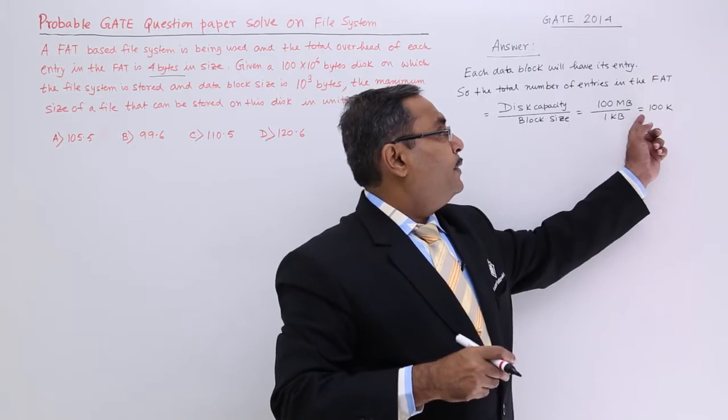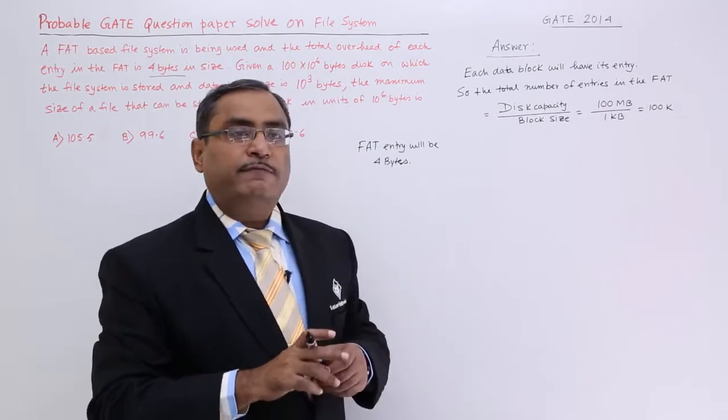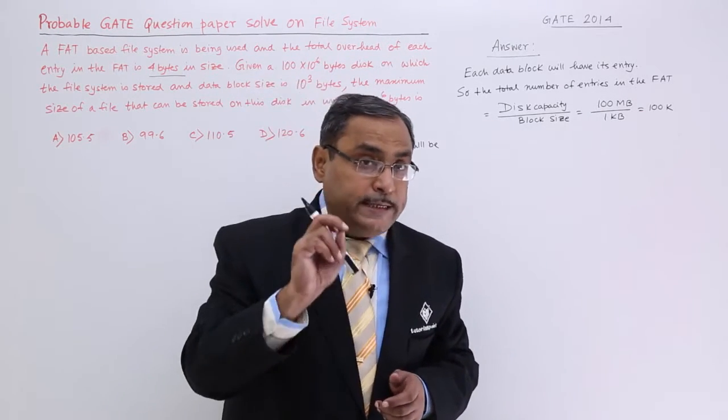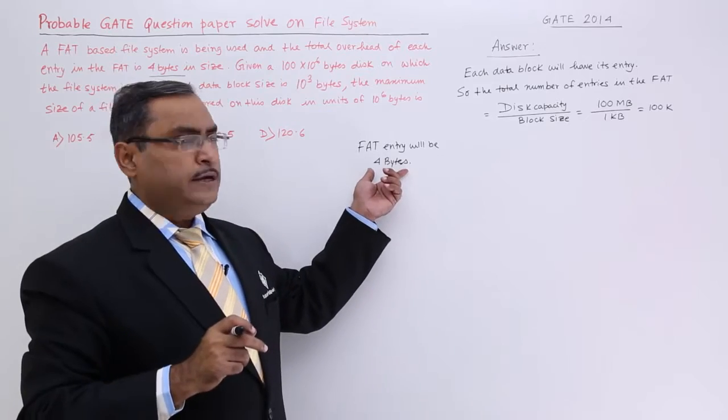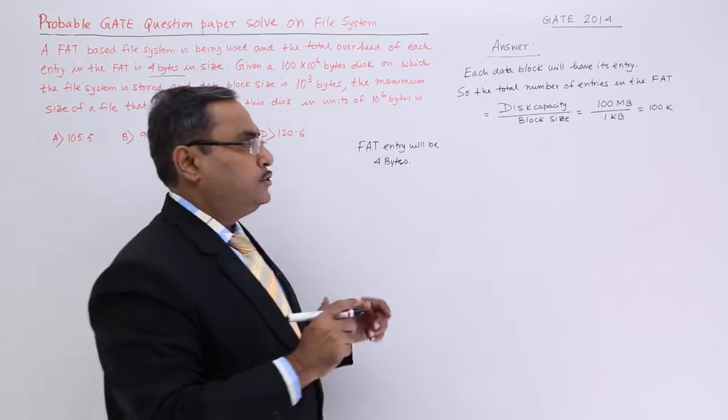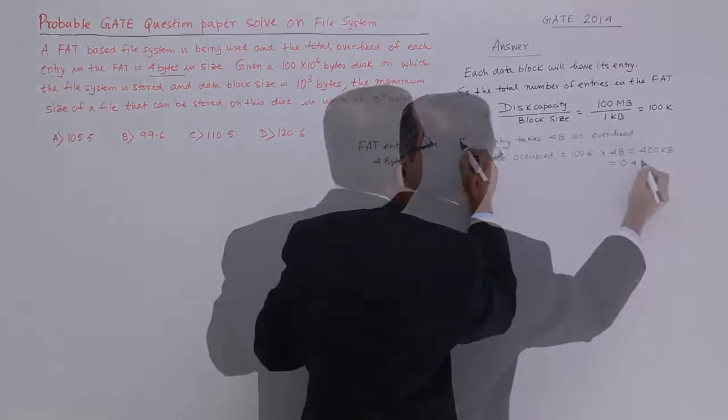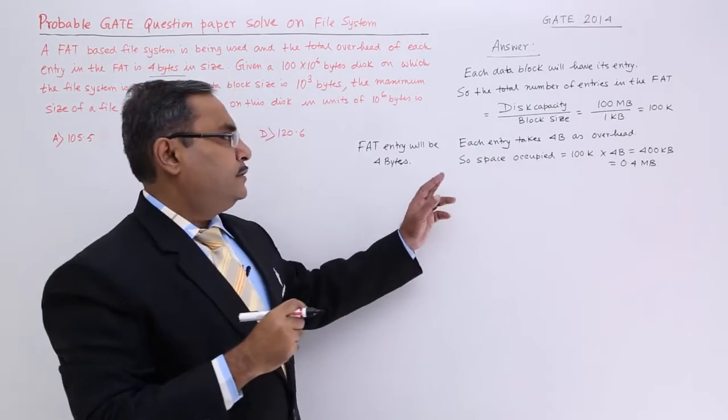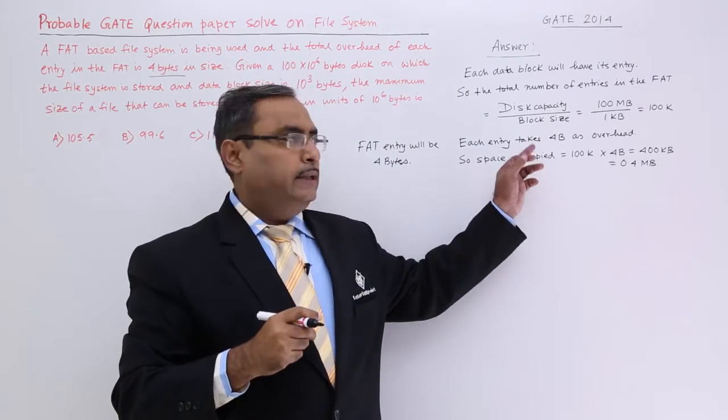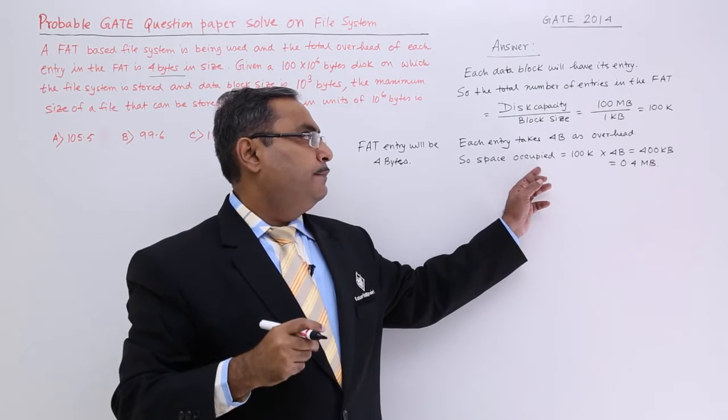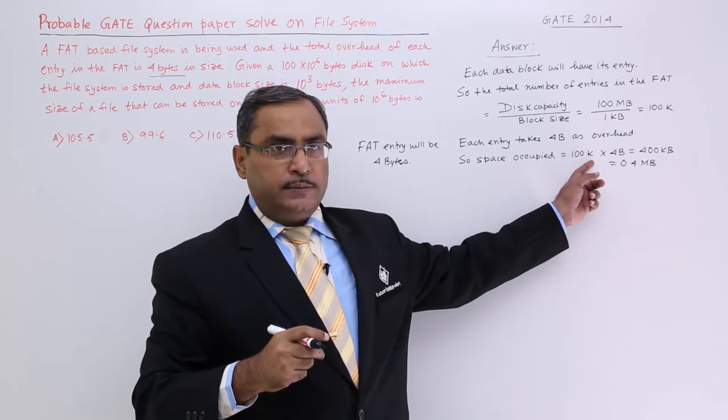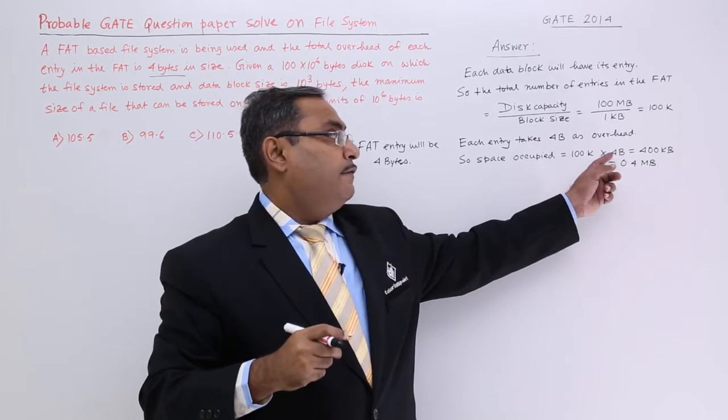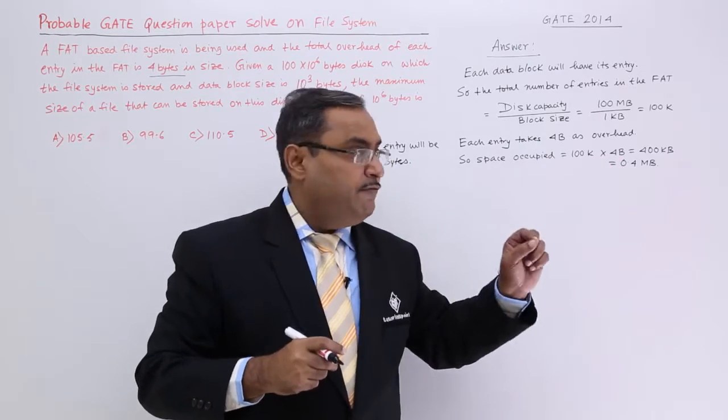This number of entries must be there in the FAT and for each and every entry what is the overhead? 4 bytes. The space occupied by the respective FAT will be this number of entries maximum in the FAT and 4 bytes will be for each and every entry.